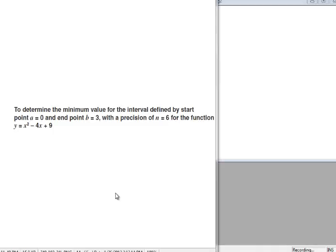To determine the minimum value for the interval defined by start point a = 0 and endpoint b = 3 with a precision of n = 6 for the function y = x² - 4x + 9.